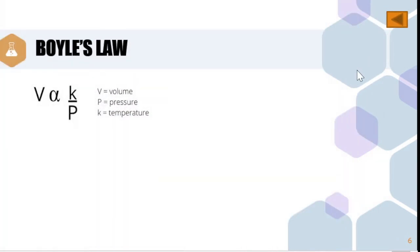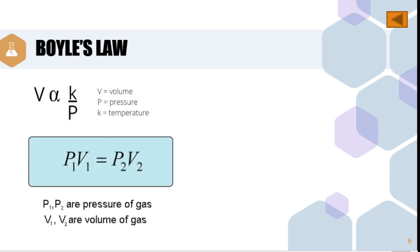Now, let us discuss the relationship between the variables in Boyle's Law. In Boyle's Law, we can say that the volume of a gas is inversely proportional to pressure. It means to say, as the pressure increases, the volume decreases, and vice versa. Therefore, the general formula for Boyle's Law is P1 or the initial pressure multiplied by the initial volume or V1.